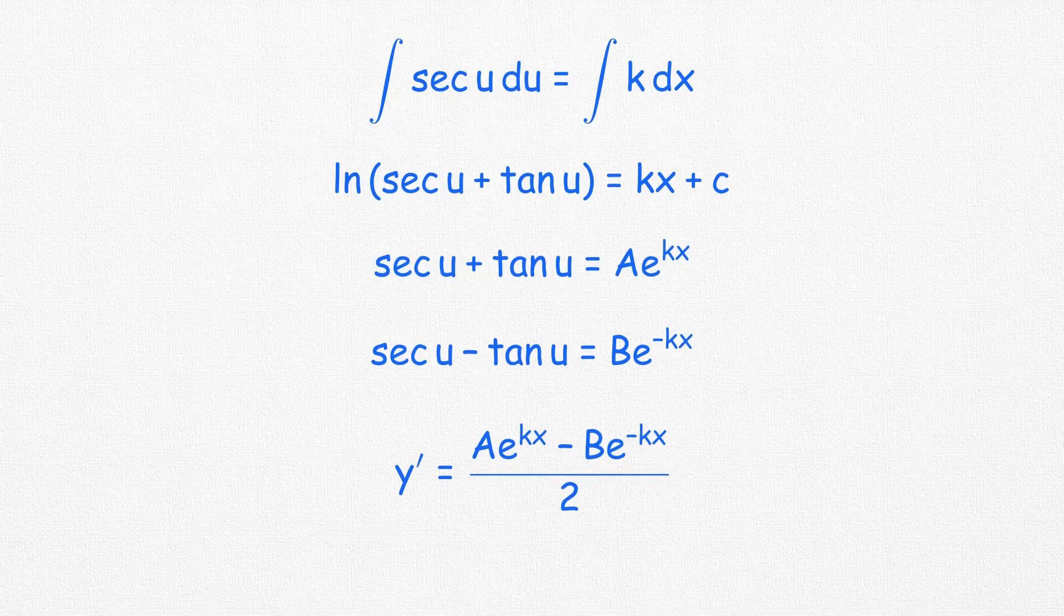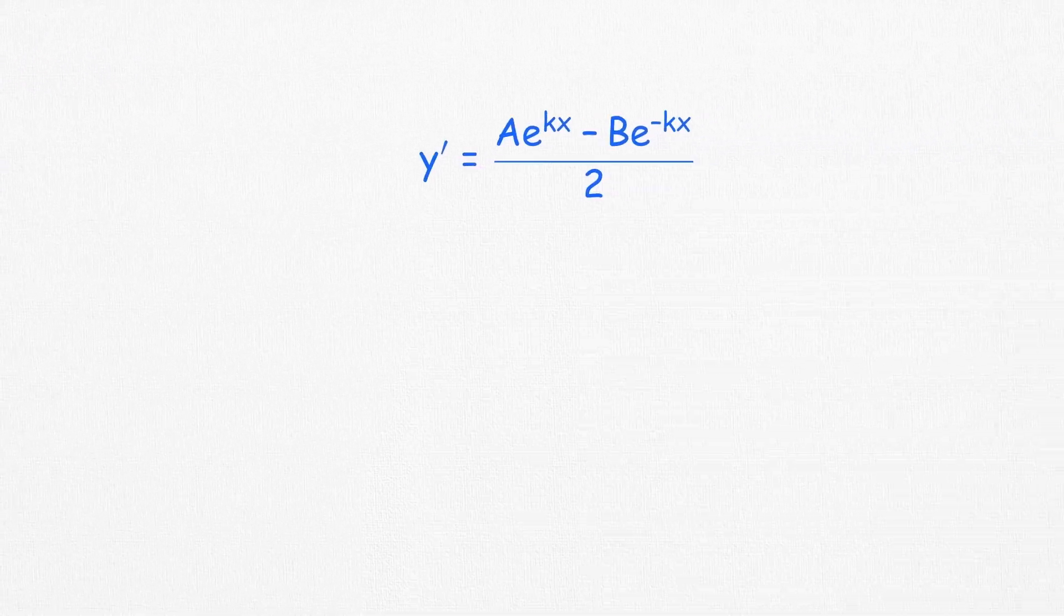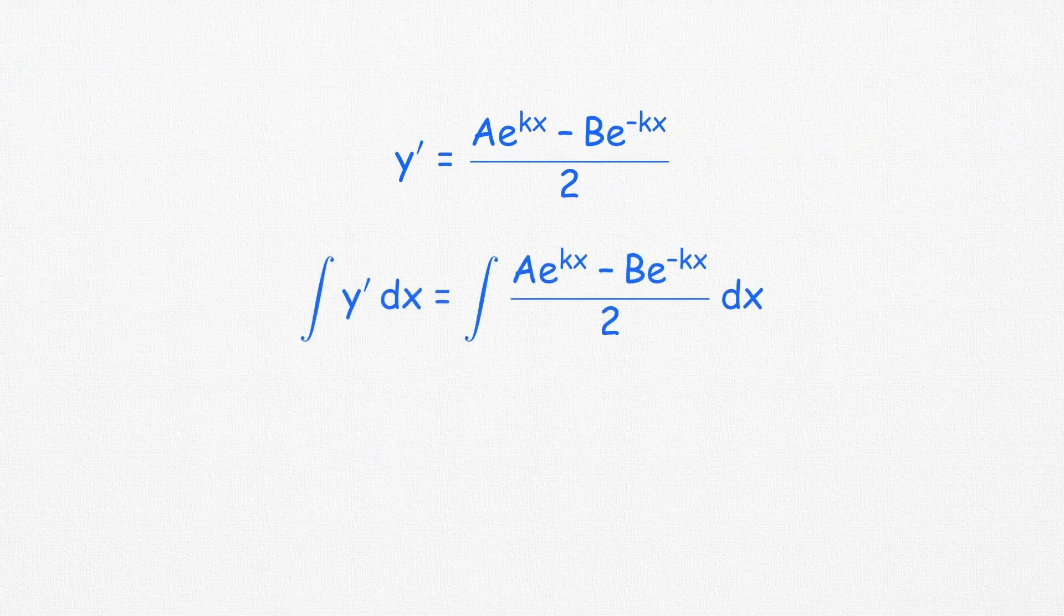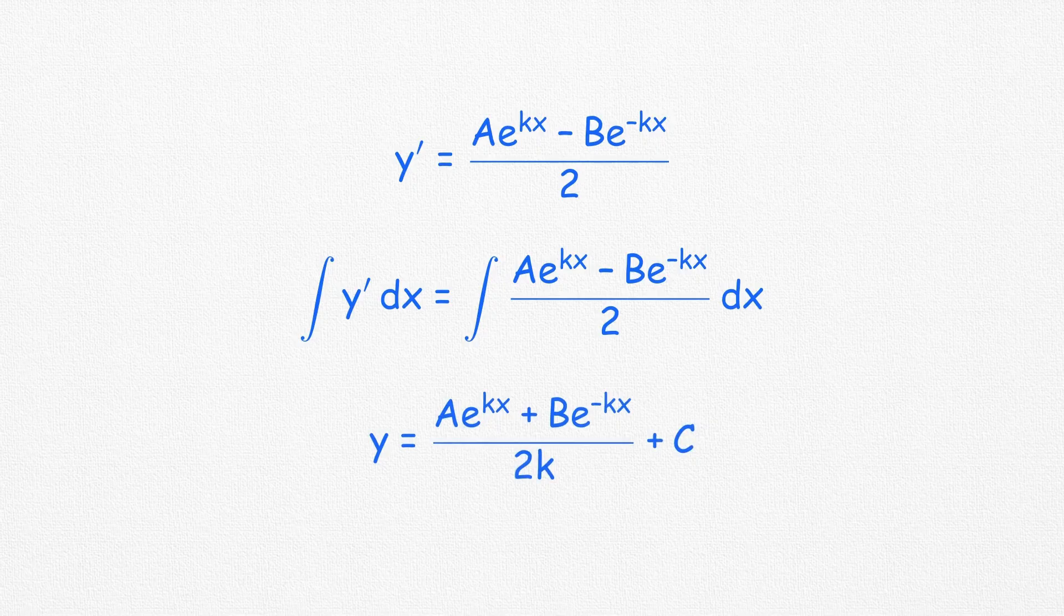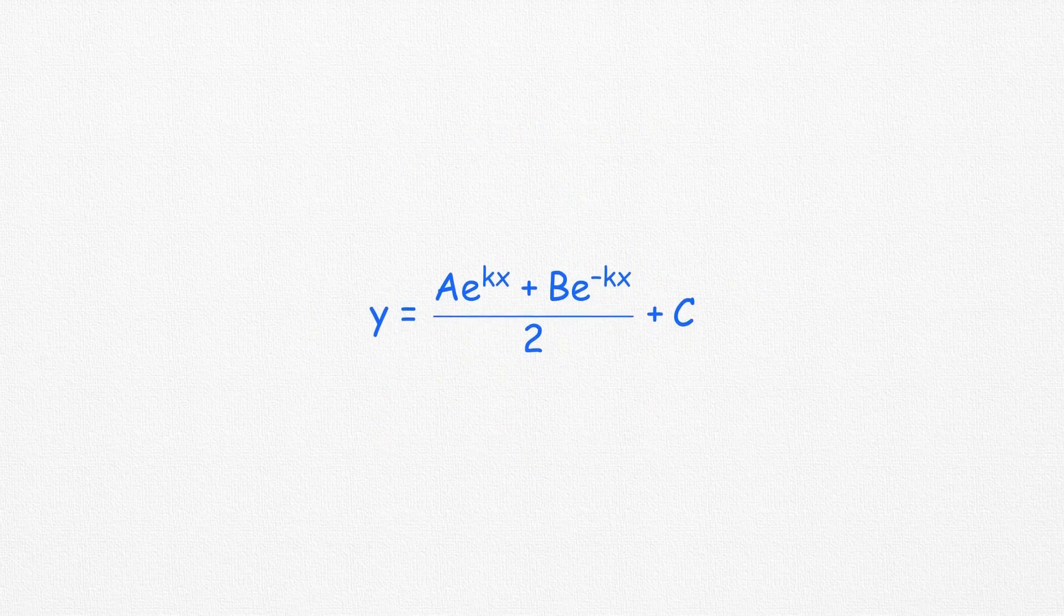This reduces the equation to a much simpler form, making the integration straightforward. We can absorb the constant k into two integration constants, a and b, giving us the general solution.